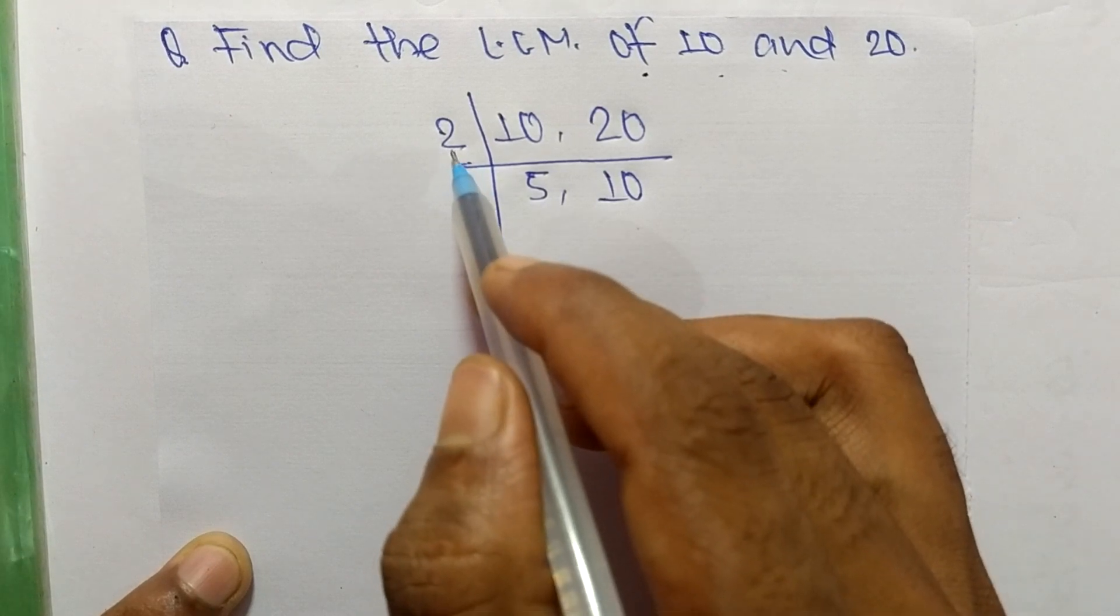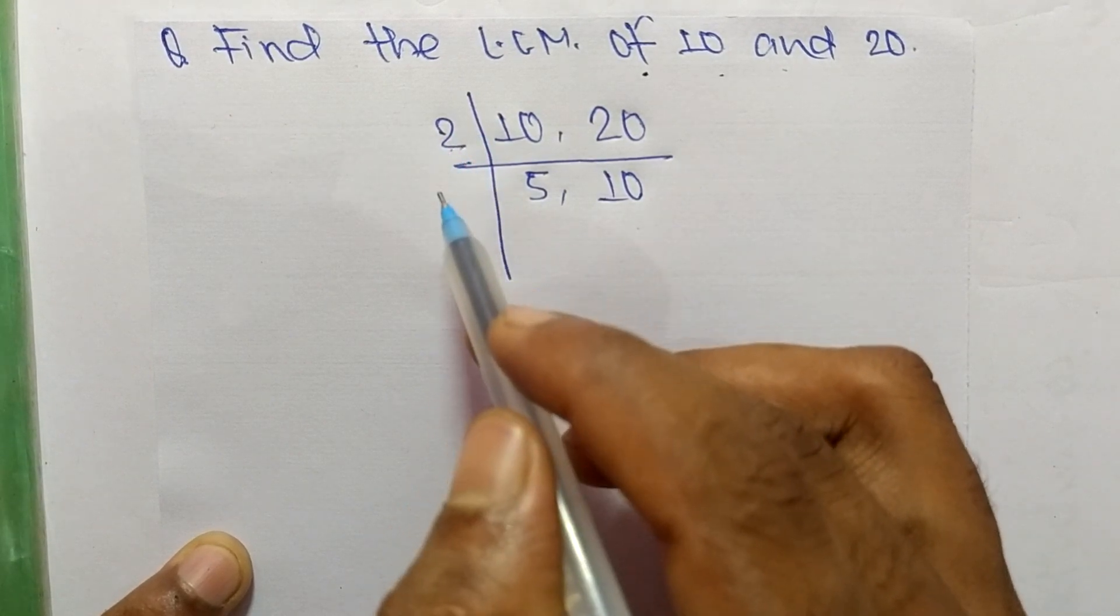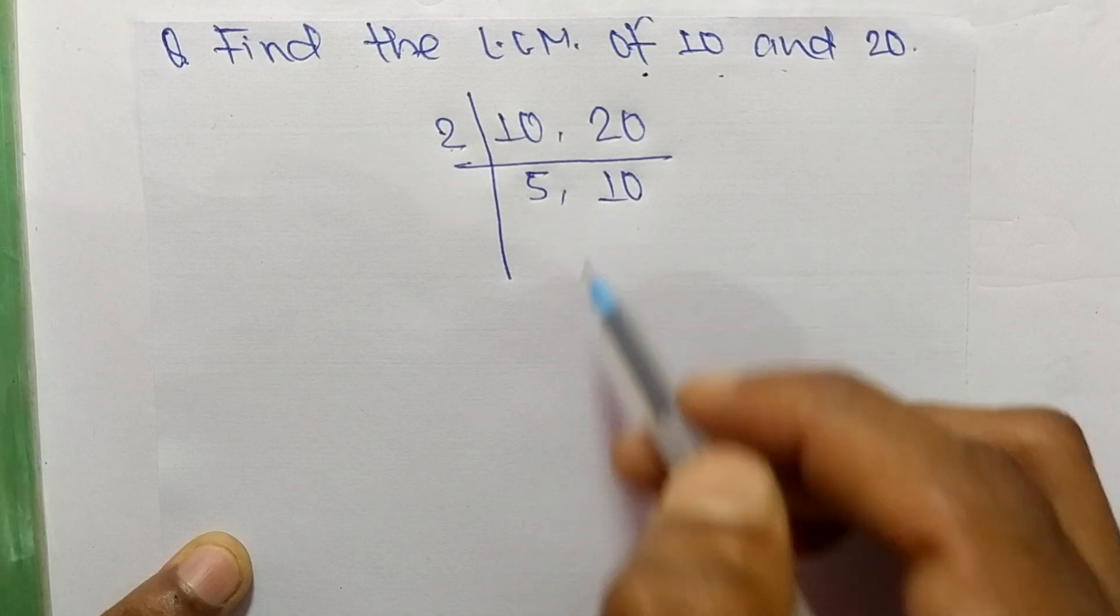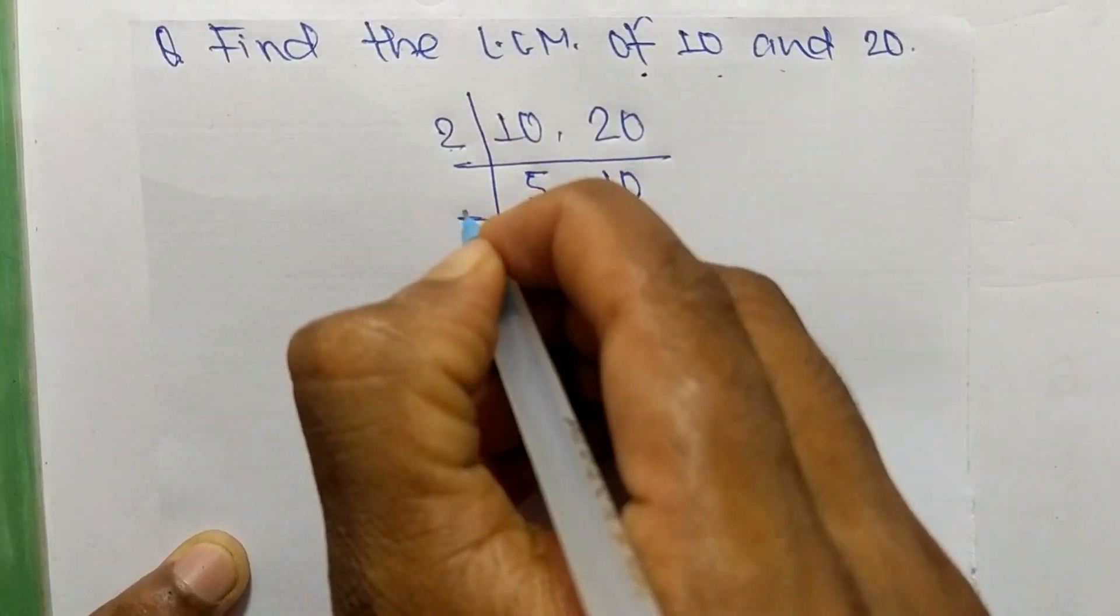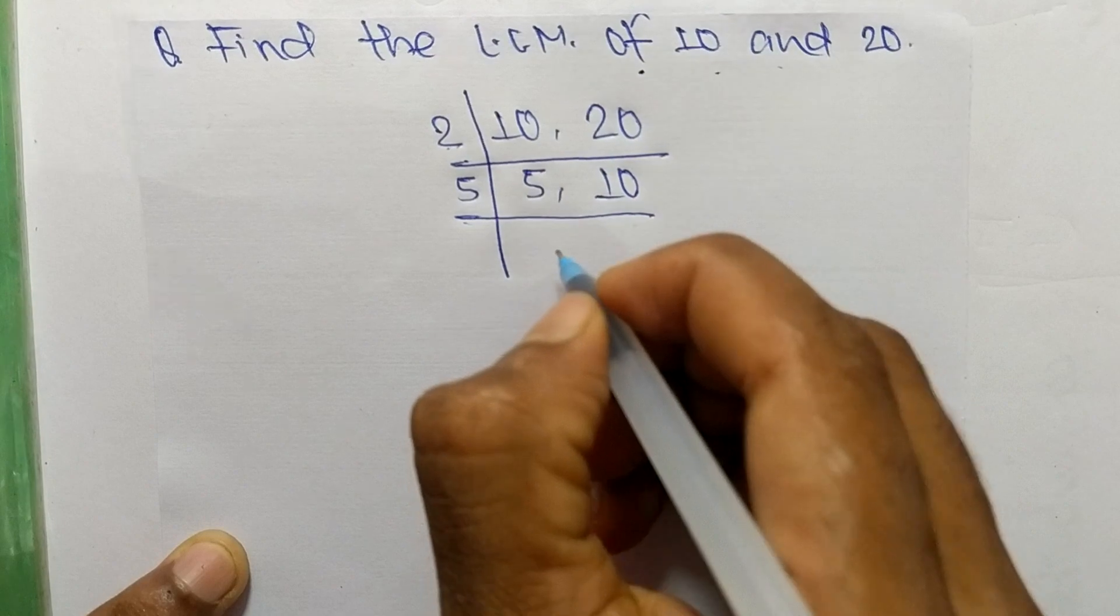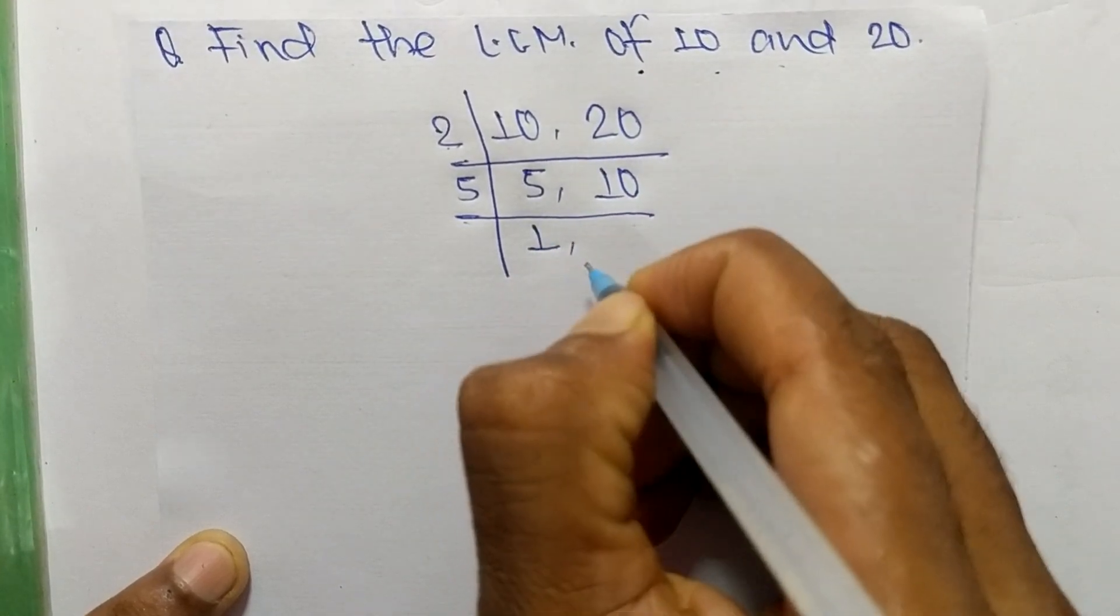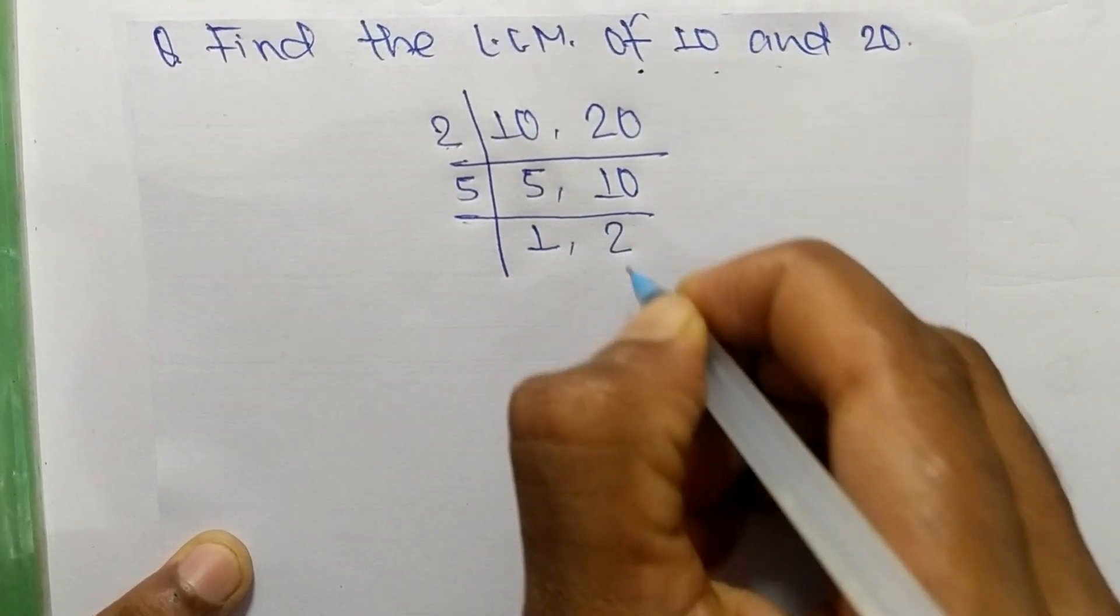So we take the number greater than 2 which can exactly divide 5 and 10. So the number is 5. So 5 times 1 means 5 and 5 times 2 means 10.